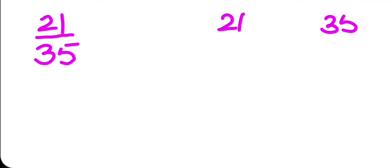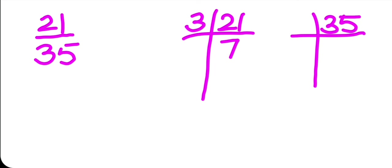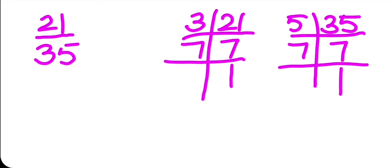So 21 and 35, let's find out the HCF. So this will go with three sevens and seven ones. This will go with five sevens and seven ones. So HCF of 21 and 35 is, I can see only seven is the common factor here. I can see easily, so HCF is seven here.